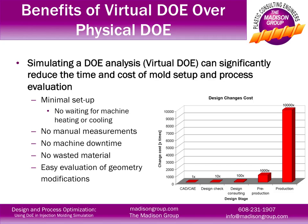For example, how is part thickness going to affect cycle time, flatness, and pressure requirements? Or how is gate sizing going to affect part quality? These are variables that cannot typically be tested in the physical DOE environment, but with virtual DOE they're just a simple change of an input parameter.